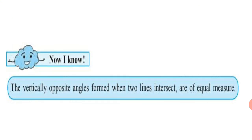The vertically opposite angles formed when two lines intersect are of equal measure. Remember, when you see two intersecting lines, the opposite angles are congruent or equal. We are going to use this property in Practice Set 20.